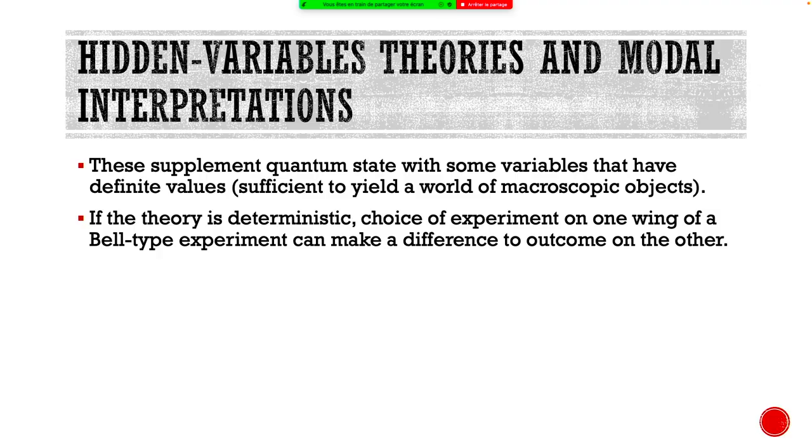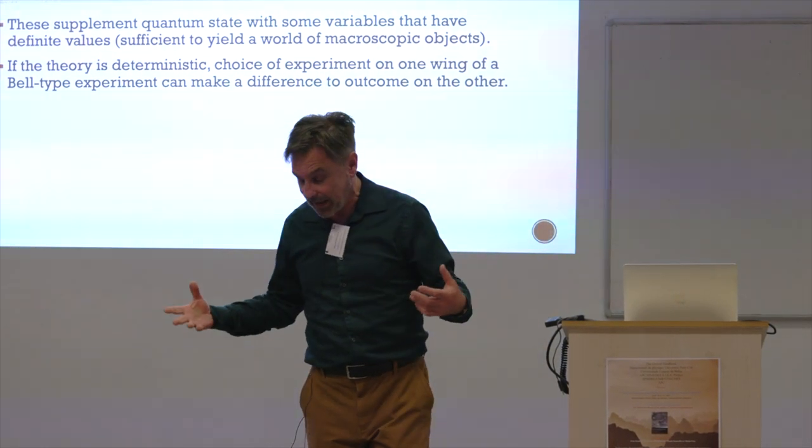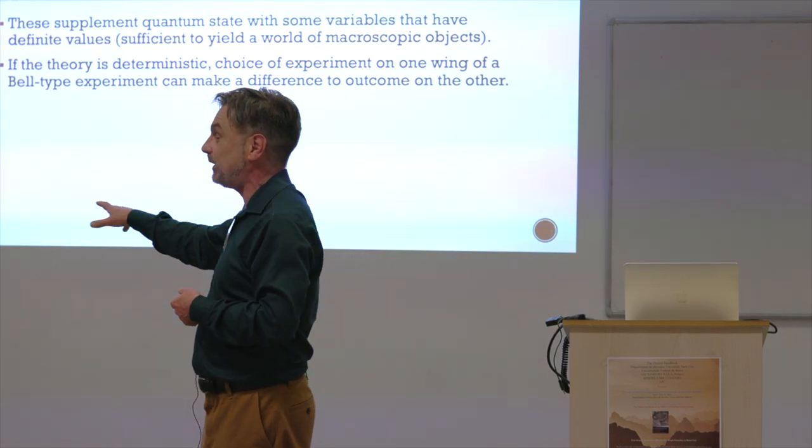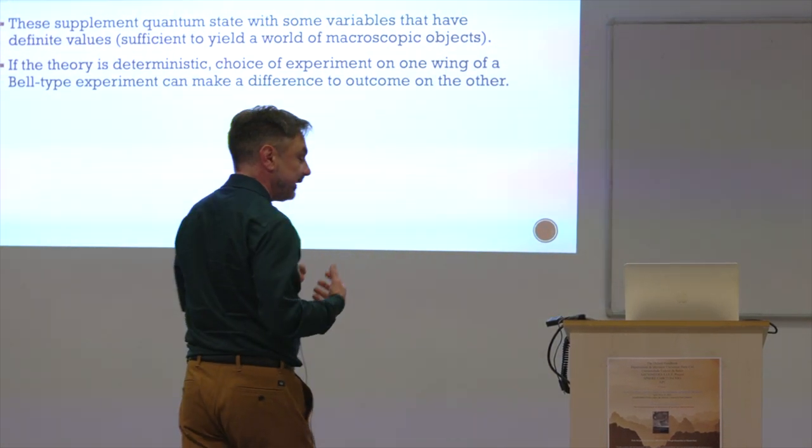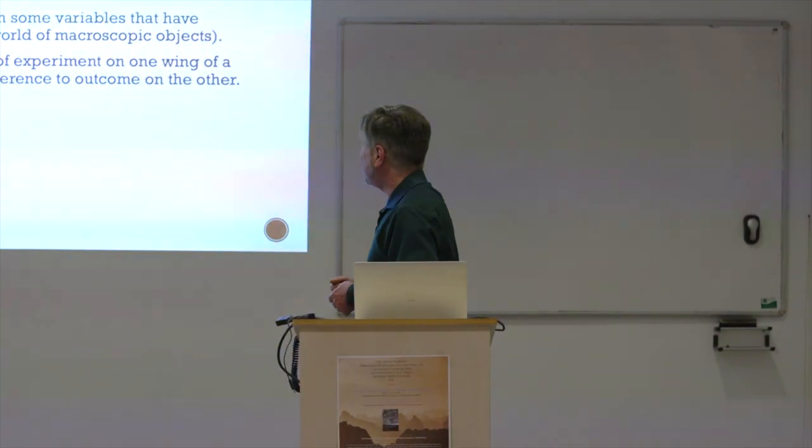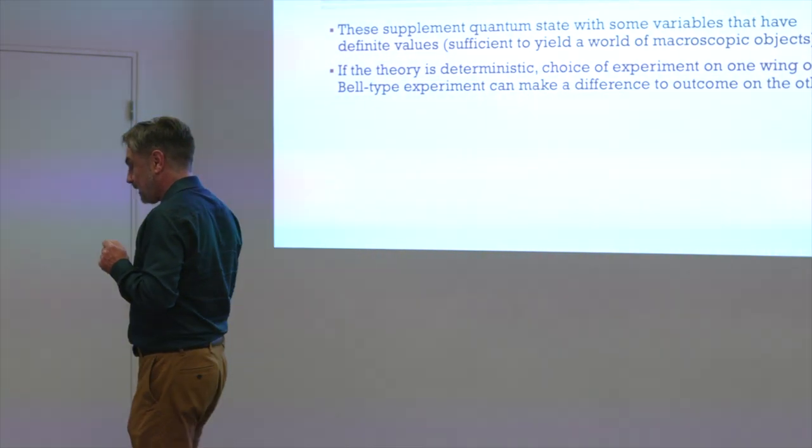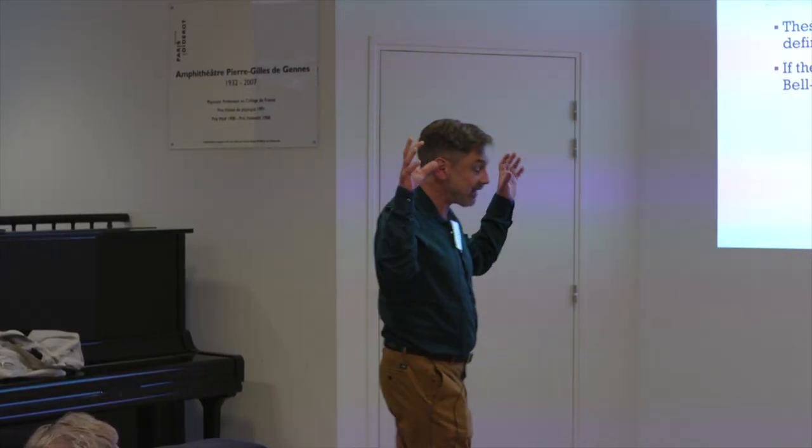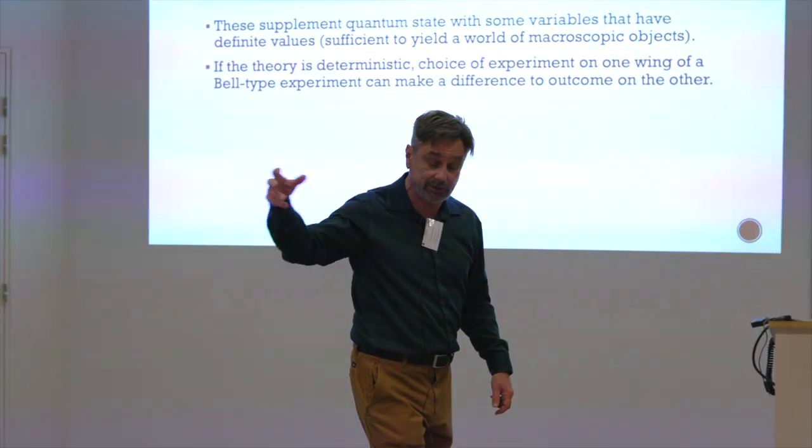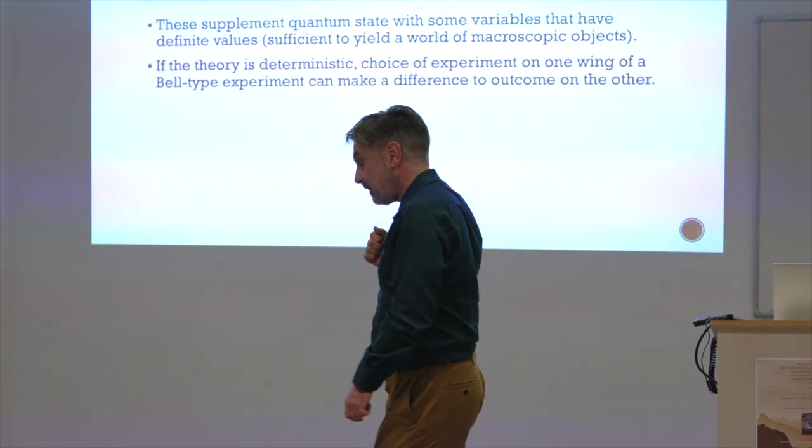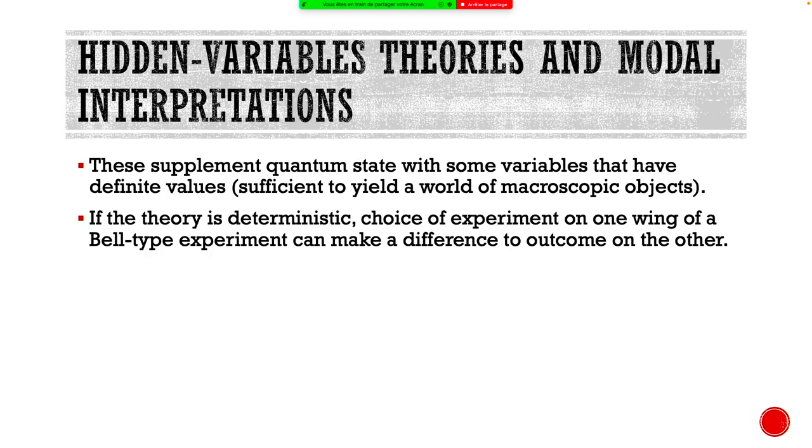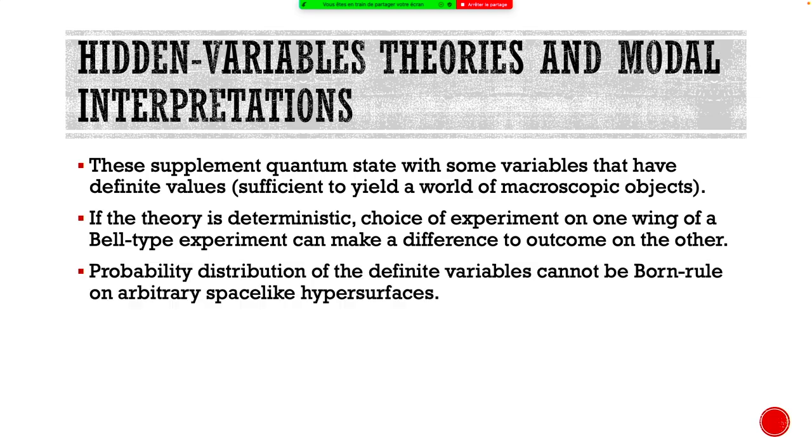Think about hidden variable theories. For a while in the 1990s there was talk about modal interpretations. Those were hidden variable theories of a sort. They supplemented the quantum state with some variables that had definite values. The idea is to have enough things with definite values that you get macroscopic objects or at least determined experimental outcomes. And we know that with the usual assumptions that go into interpreting Bell-type experiments, if you have a theory like that where you have some variable that determines the outcome of an experiment, then it has to have action at a distance. Choice of experiment in one wing can sometimes make a difference in the outcome of the other.